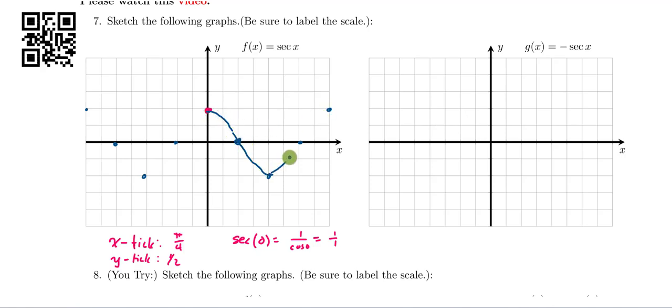but this would be a graph of the secant function right here. And the secant function is undefined wherever the cosine function is 0. That's a handy way to remember where our asymptotes are for this.